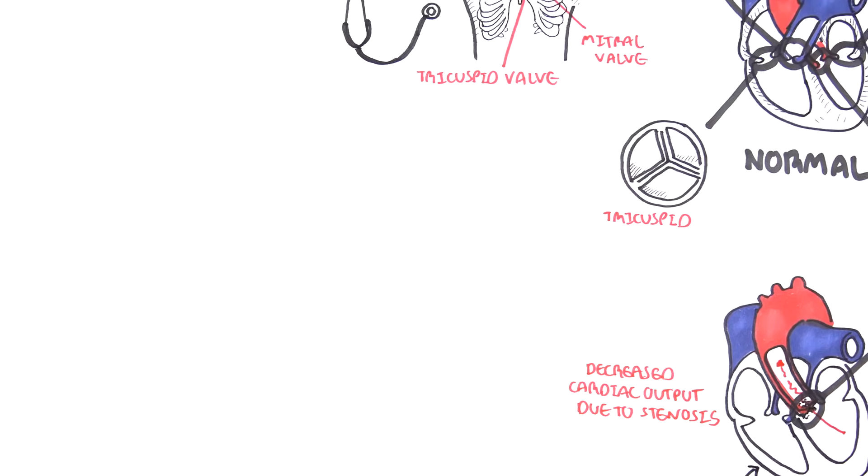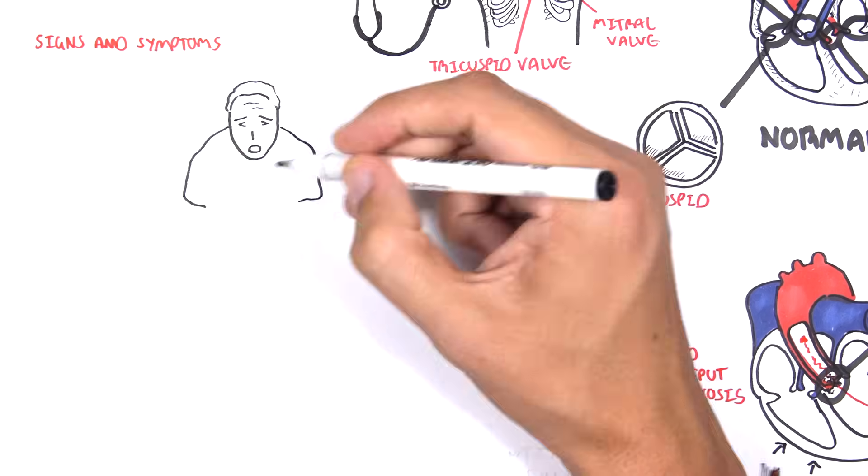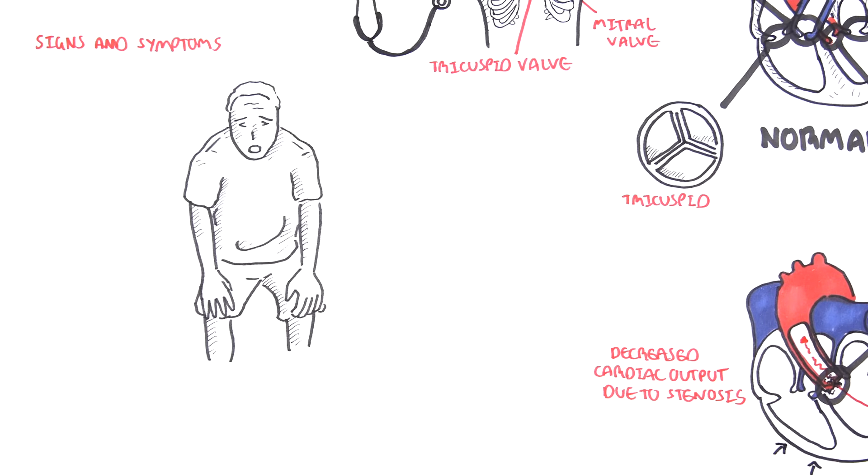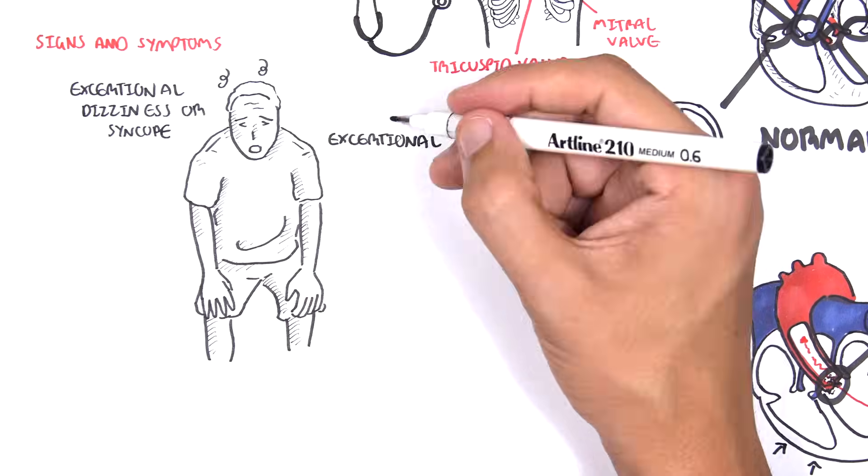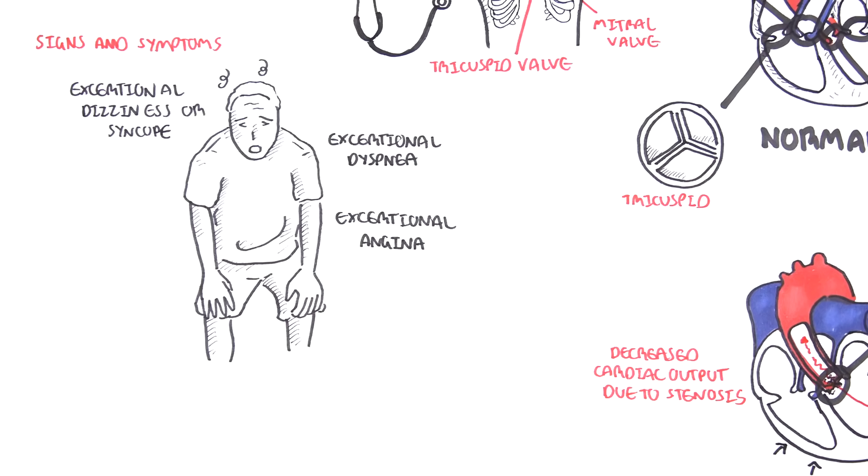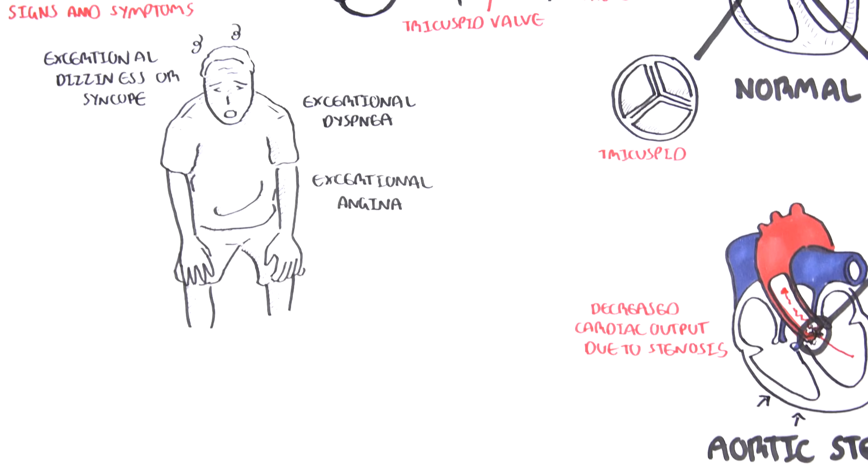Because of the decrease in cardiac output, we get the following three cardinal signs and symptoms of aortic stenosis. These are dizziness or syncope on exertion, dyspnea on exertion, and exertional angina.